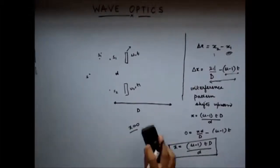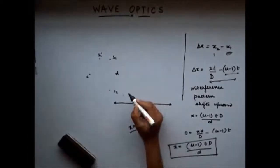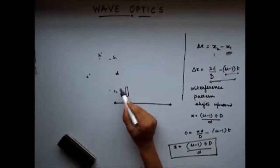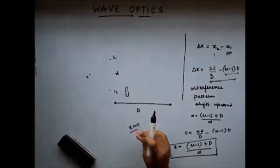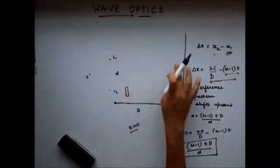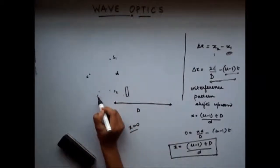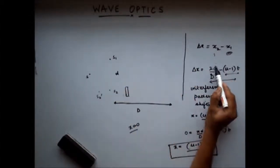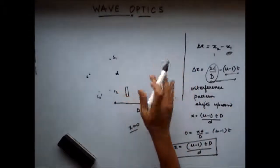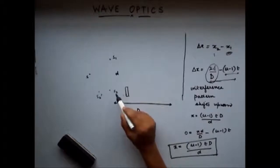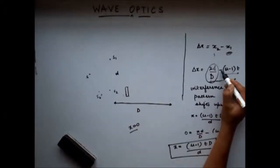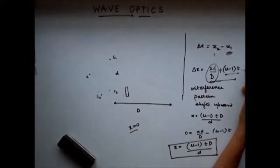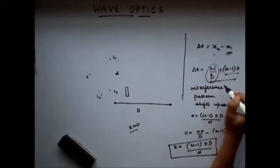Now what happens if instead of the first slit, we have a glass slab in front of the second slit? The path distance X2 was already larger than X1. Because of the introduction of this glass slab, there is a delay in path X2, and that delay is equivalent to shifting S2 to S2 dash. The net path difference is xd/d plus this delay added to X2, minus X1 which remains the same.